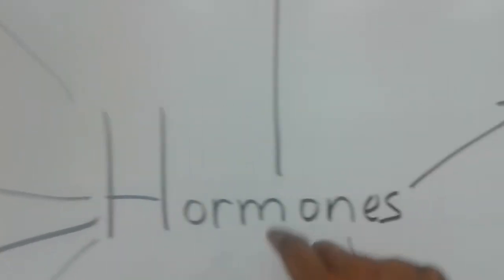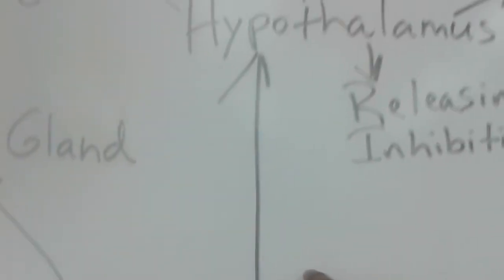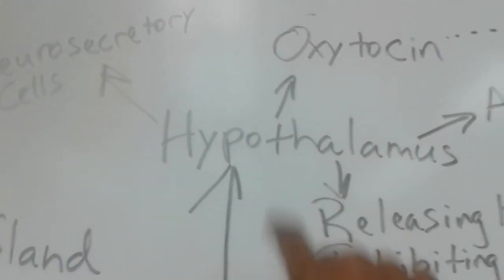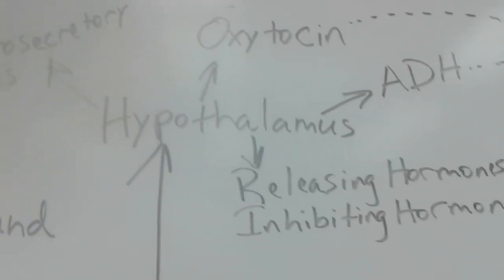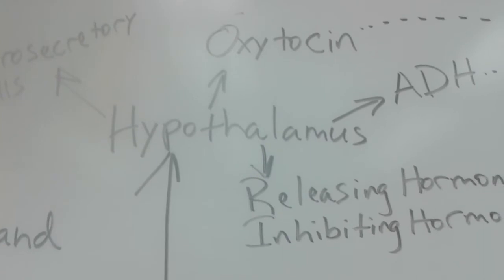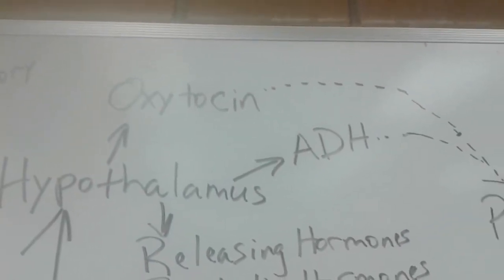I'm gonna go clockwise and I'm going to start with 12 o'clock which goes to the hypothalamus. So the hypothalamus is one of the first structures that you get to learn about in the endocrine system. It produces actually two different hormones, it produces oxytocin and ADH.